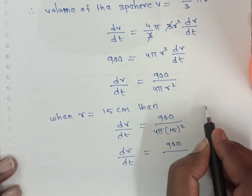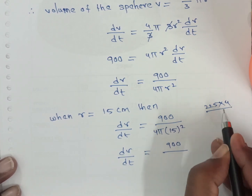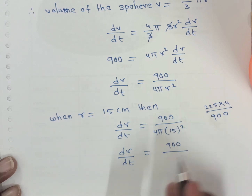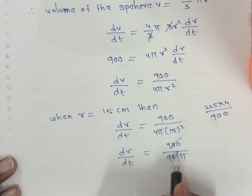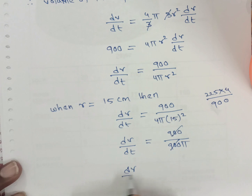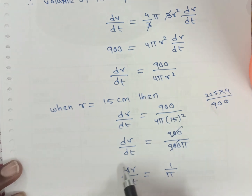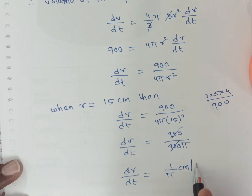Now, 15 squared is 225. So 225 into 4 equals 900. Therefore 900 cancels with 900, and DR by DT is equal to 1 by pi. So the radius is increasing at a rate of 1 by pi centimeters per second.